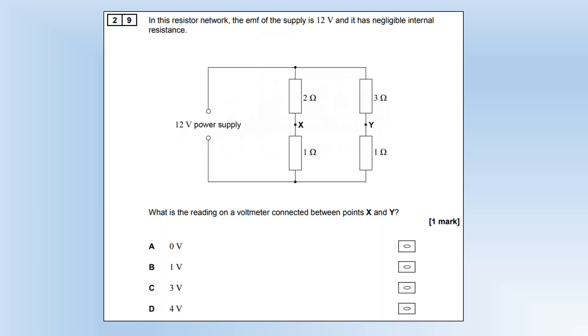In this resistance network, the EMF of the supply is 12 volts with no internal resistance. What is the reading on a voltmeter connected between X and Y? We have to work out the potential at X and the potential at Y. The potential at X is going to lose 8 volts across the 2 ohm resistor, 4 across the 1 ohm, so X is going to be 4 volts. At Y, it's going to lose 9 volts across the 3 ohm, 3 across the 1 ohm, leaving 3 volts at Y, giving us a potential difference of 1 volt.